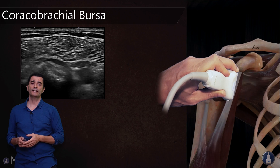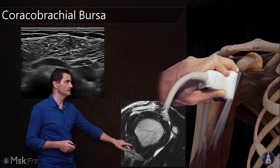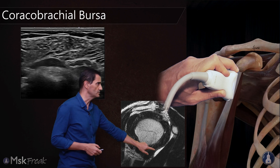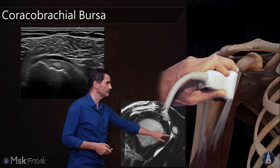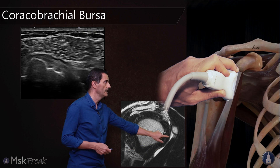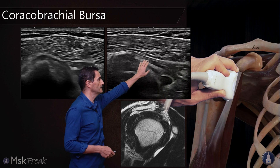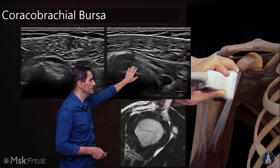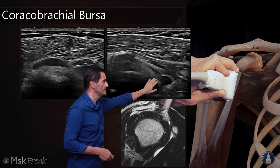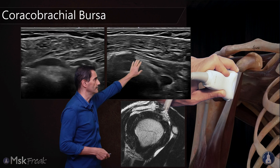In the long axis, you can see here the MRI — a very good image of the coracobrachial bursa. And this is the ultrasound. This is the coracobrachialis, this is the subscapularis, and you can see the bursa between them.